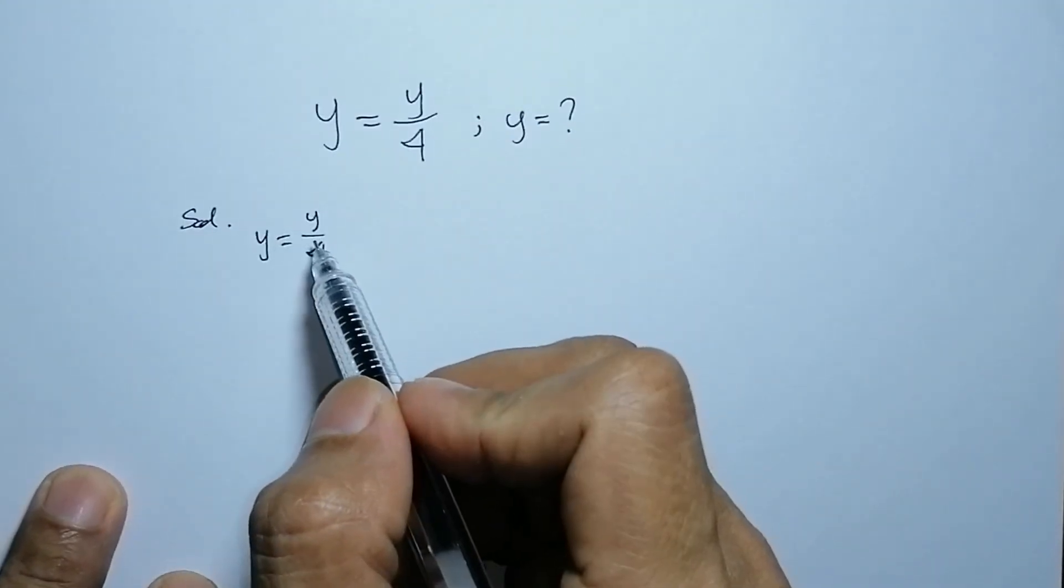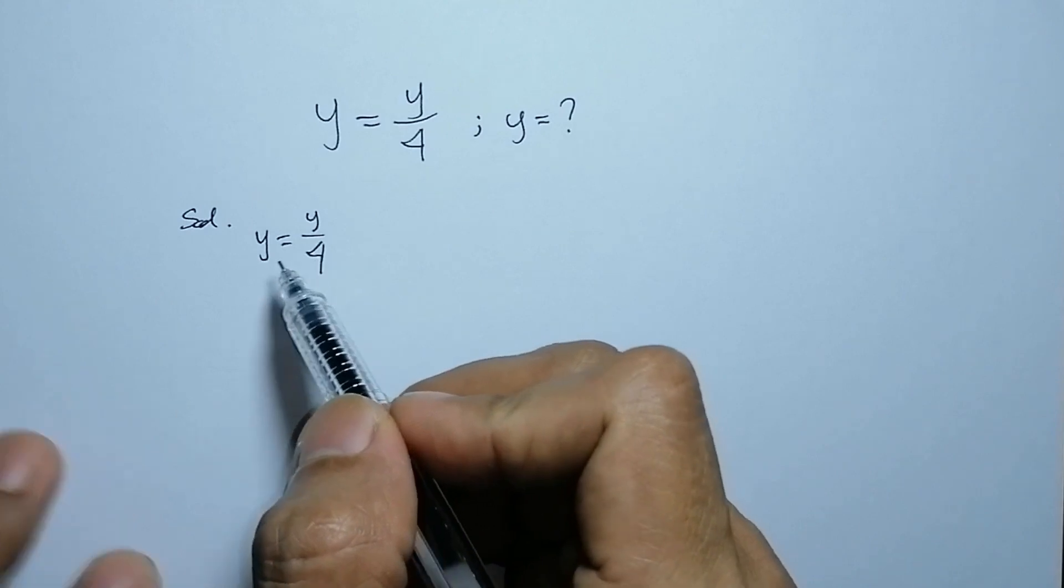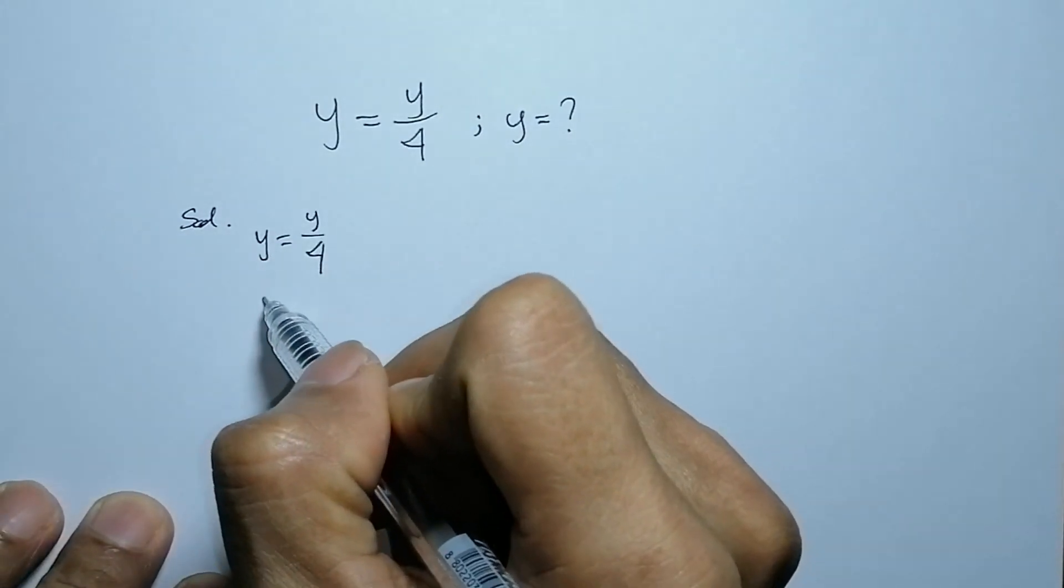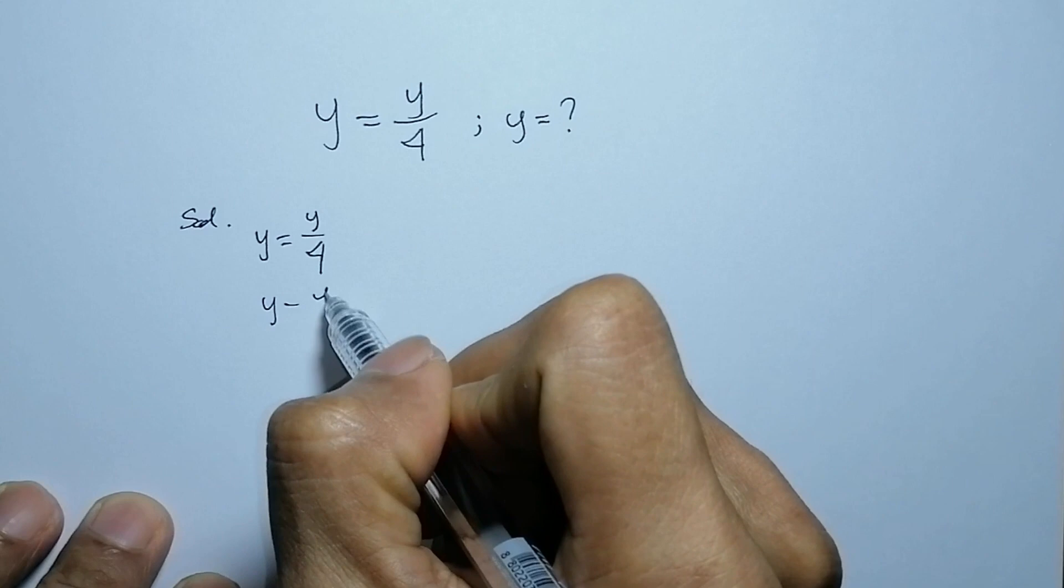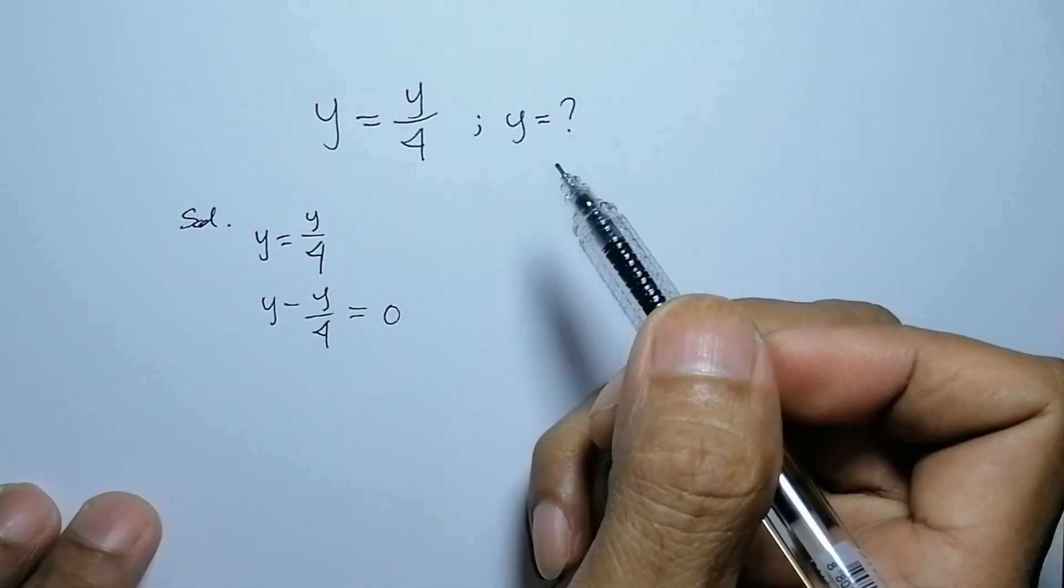We move this y over 4 to the left side. Now, y minus y over 4 is equal to 0.